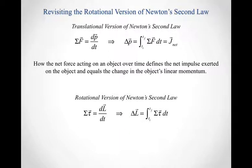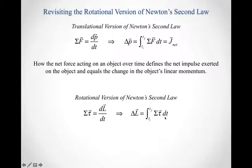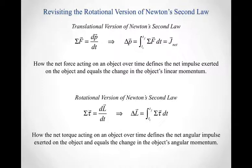We can do the same thing with the rotational version of Newton's second law. The net torque equals the time rate of change of angular momentum — a derivative equation. Turning that into an integral equation, the change in angular momentum equals the integral over time of the net torque times dt. This gives us a way to define the net angular impulse exerted on the object, which equals the change in the object's angular momentum.